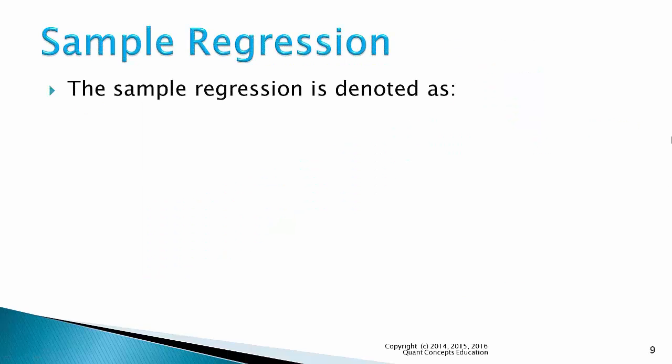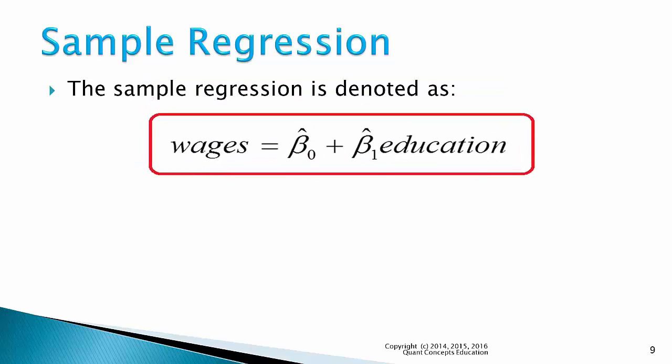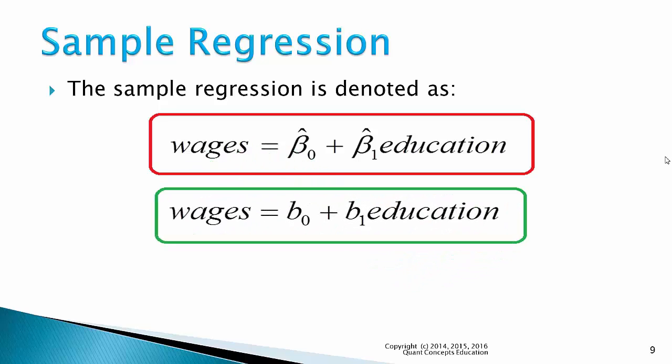The sample regression line is denoted as wages equals beta hat 0 plus beta hat 1 times education. The hat on top of the betas tells us that they are estimates of the population betas. Or, the sample regression line could also look like this. Here, the little b's are estimates of the population betas. How the sample regression line is written depends on your textbook or your instructor's preferences.